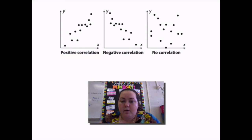The next one in the middle, it's going down. If I look at it from left to right, like I read a sentence, the points are starting to go down. So that has a negative correlation. And if there's not really a pattern, you can't tell if it's going up or going down, then that would be no correlation.